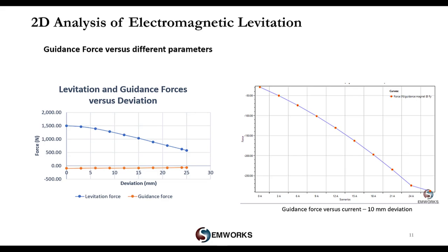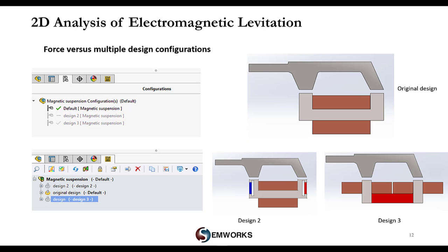The force results for both levitation and guidance magnets show that both decrease when the deviation becomes large. This is a crucial condition — it means the train must be maintained stable in the aligned position.